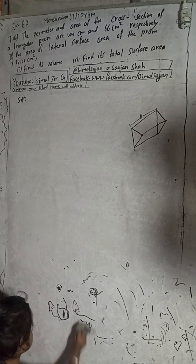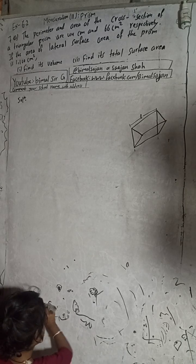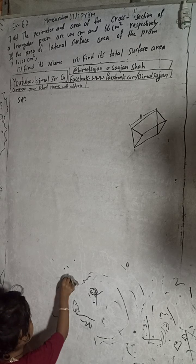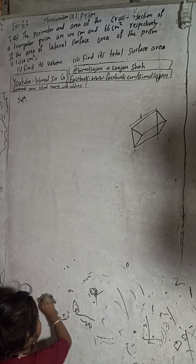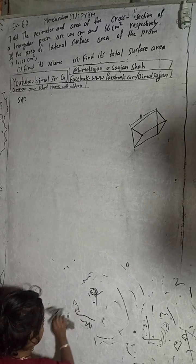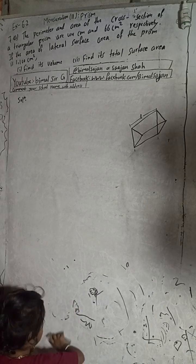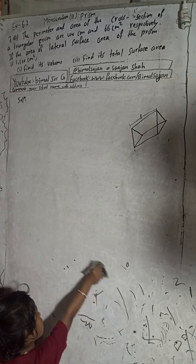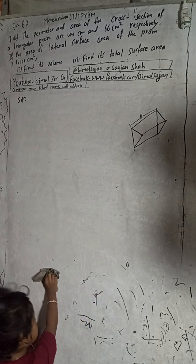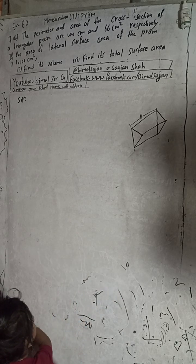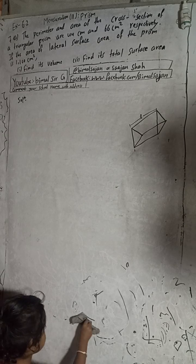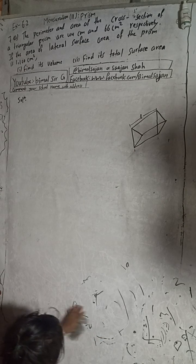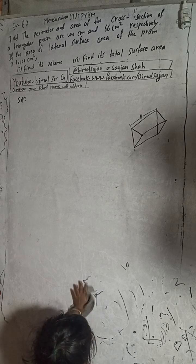Hi class 9 and 10 students, welcome back to Bhimalsarji YouTube channel. This is question number 7a, exercise 6.2, mensuration second part — prism. This is the demand of one of my YouTube subscribers whose comment and likes are in the second position, so I am going to solve it for you, dear subscriber.